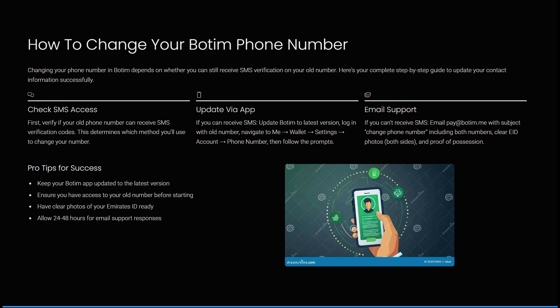If you can receive SMS updates, update Botim to the latest version, log in with your old number, navigate to the Me tab, look for Wallet, then Settings. In Settings, look for Account Settings and then Phone Number, and follow the prompts to change that phone number.